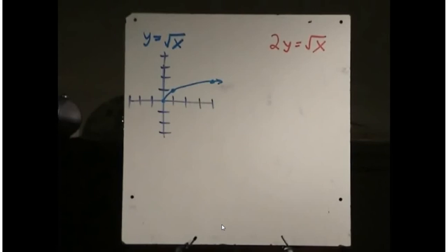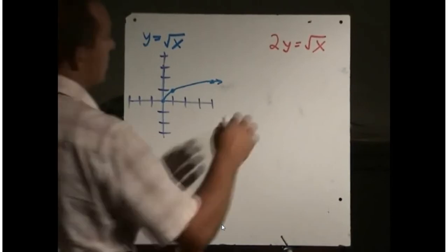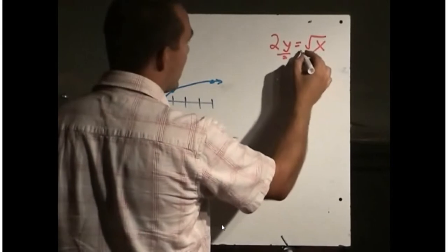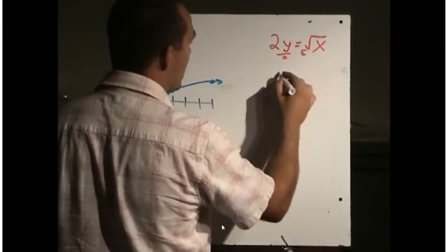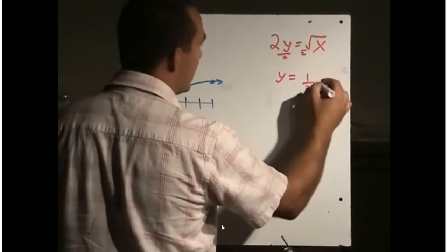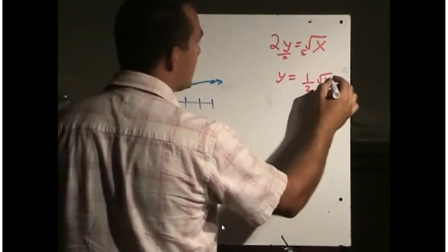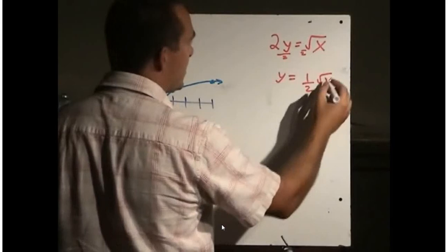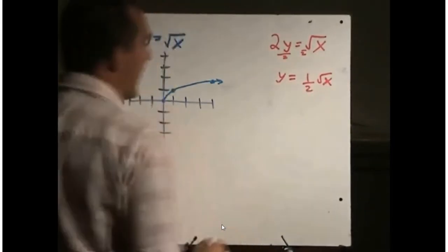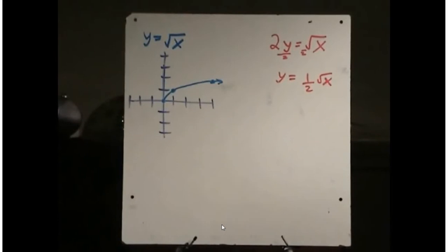To enter this in the graphing calculator, we can't have a coefficient on y, so we do a little algebra — dividing everything by 2 to isolate y. We get y equals one-half of the square root of x. We enter this into the calculator and see what we get.